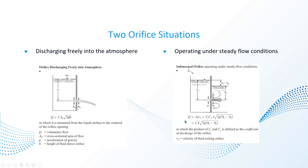The submerged orifice situation involves a more complicated equation with many more factors, while the free discharge case is simpler. For the orifice discharging freely into the atmosphere, the key variables are: volumetric flow (Q), the cross-sectional area of flow, the acceleration due to gravity (9.81 m/s² or 32.2 ft/s² depending on units), and the height of the fluid above the orifice.